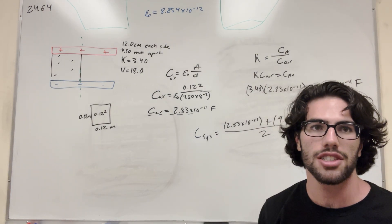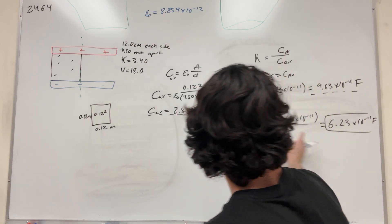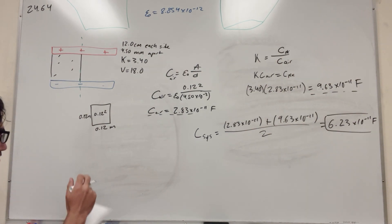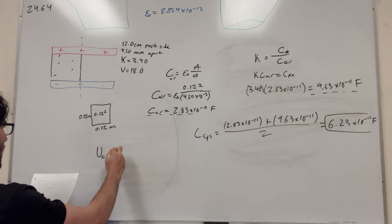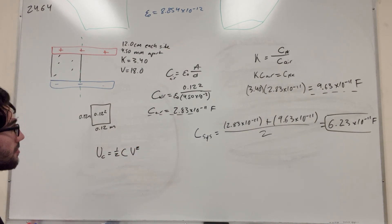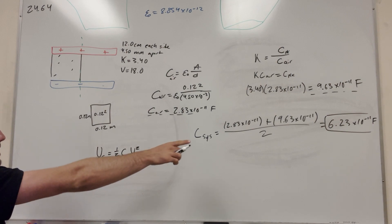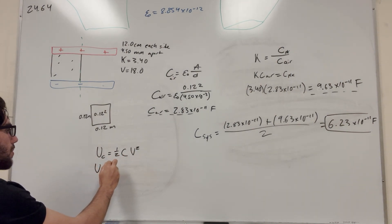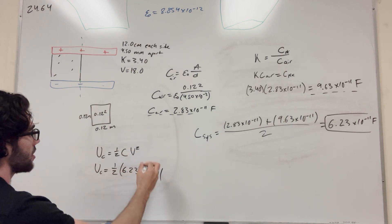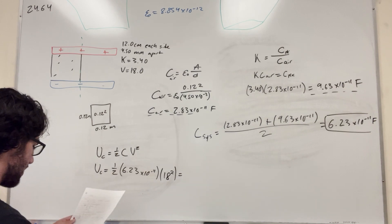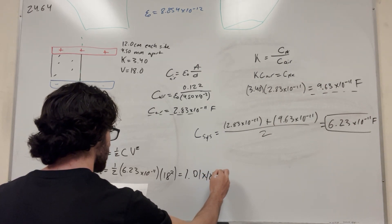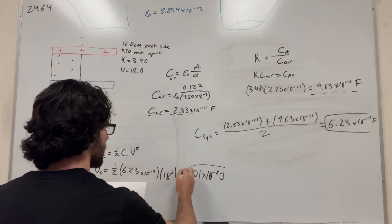Part B asks how much energy is stored in the capacitor. The potential energy of a capacitor is ½ times capacitance times the potential difference squared. We're given the potential difference is 18 volts, and we just found the capacitance of the system. So U = ½ times 6.23 times 10 to the negative 11 times 18 squared, which gives us 1.01 times 10 to the negative 8 joules. That's Part B.